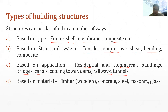Structure can also be classified based on material. Basically, a structure is constructed using a material, and based on the principal material used we can classify our structure. In this manner, a structure can be wooden — where wood is used to construct the structure — or it can be of steel, masonry, glass, or some other materials.